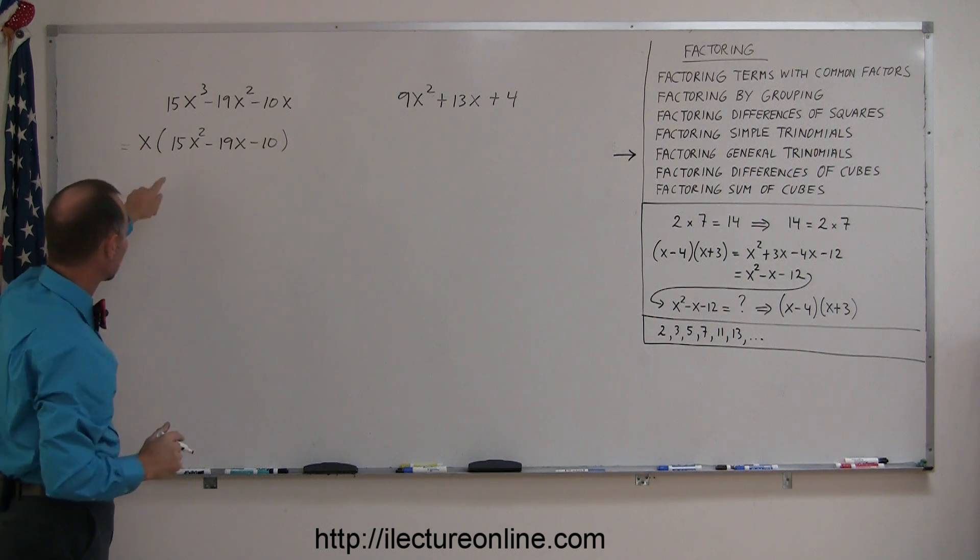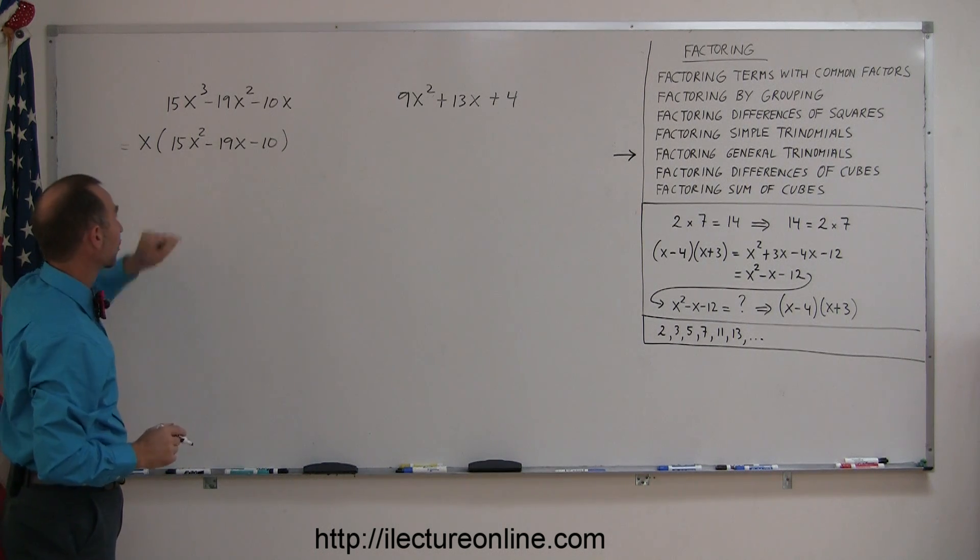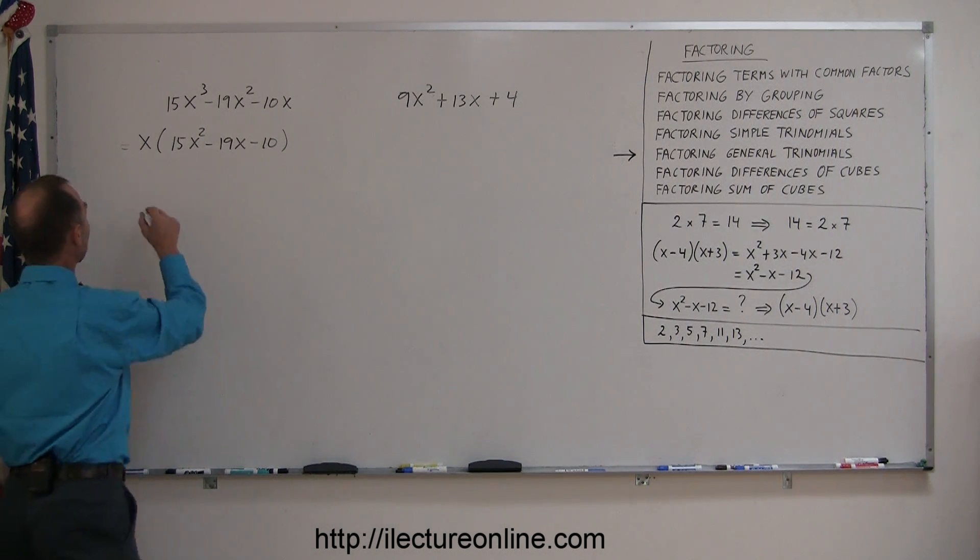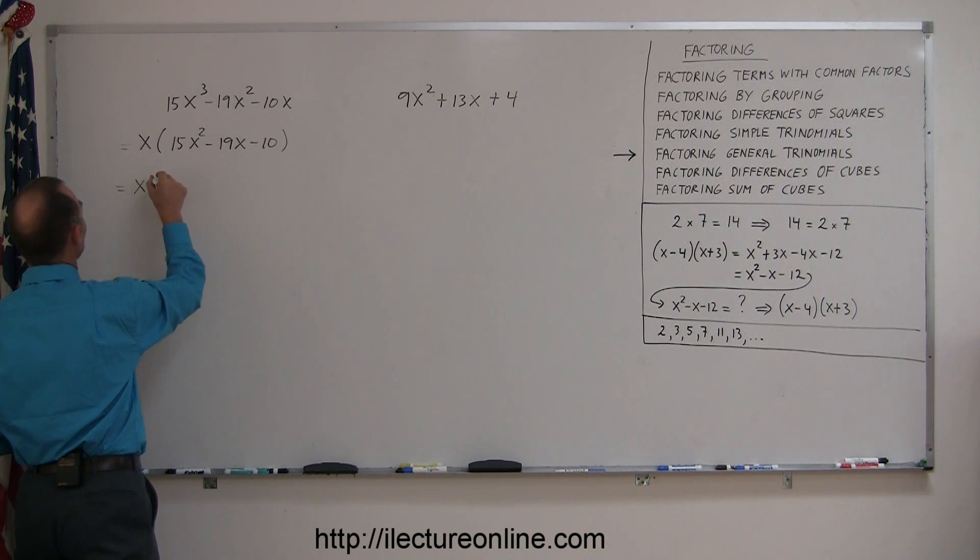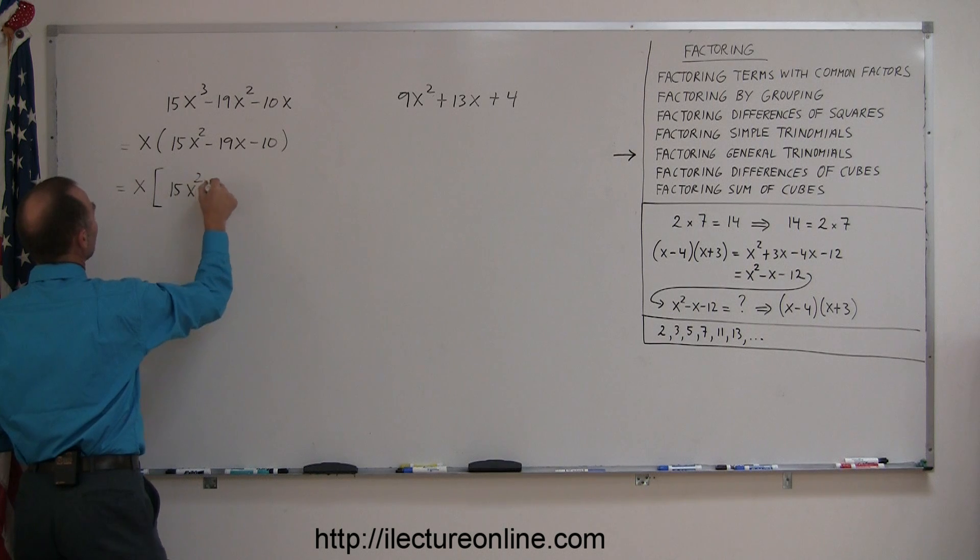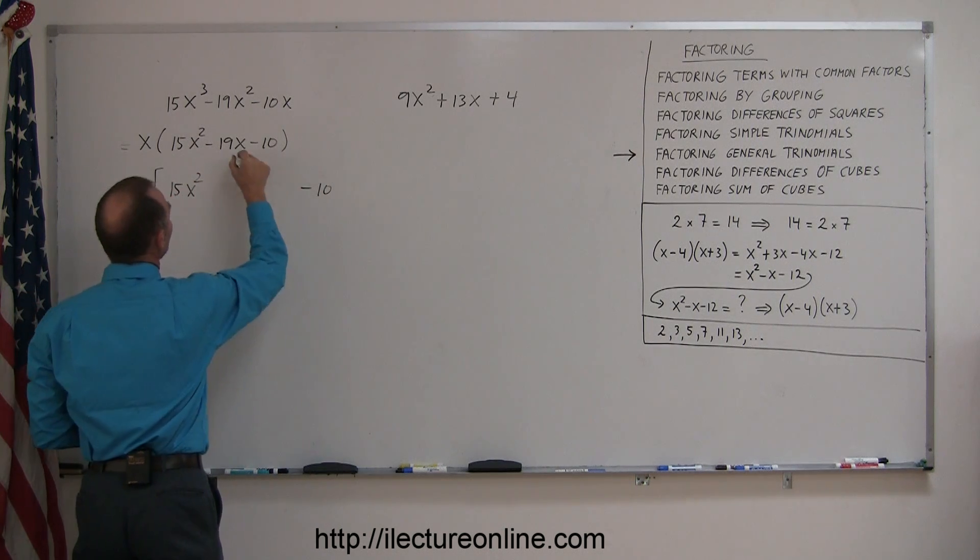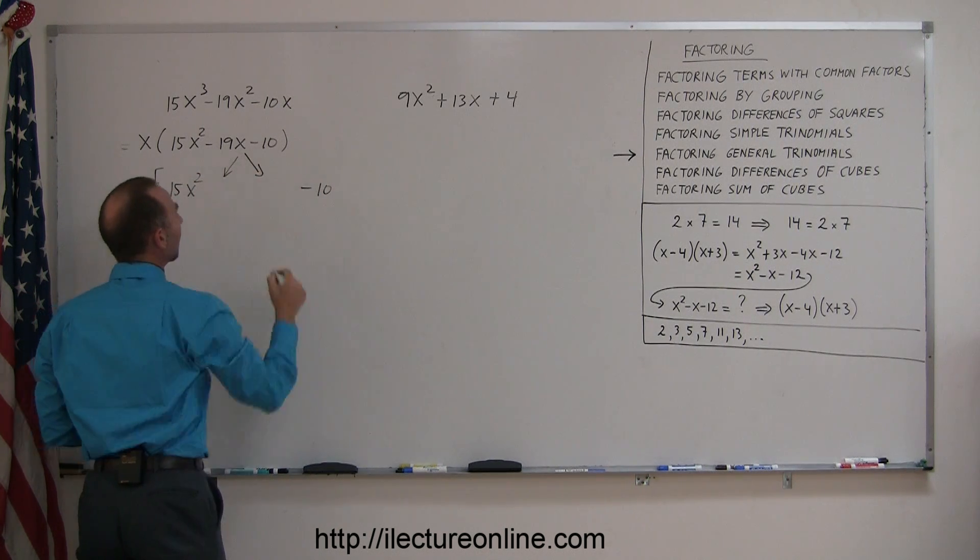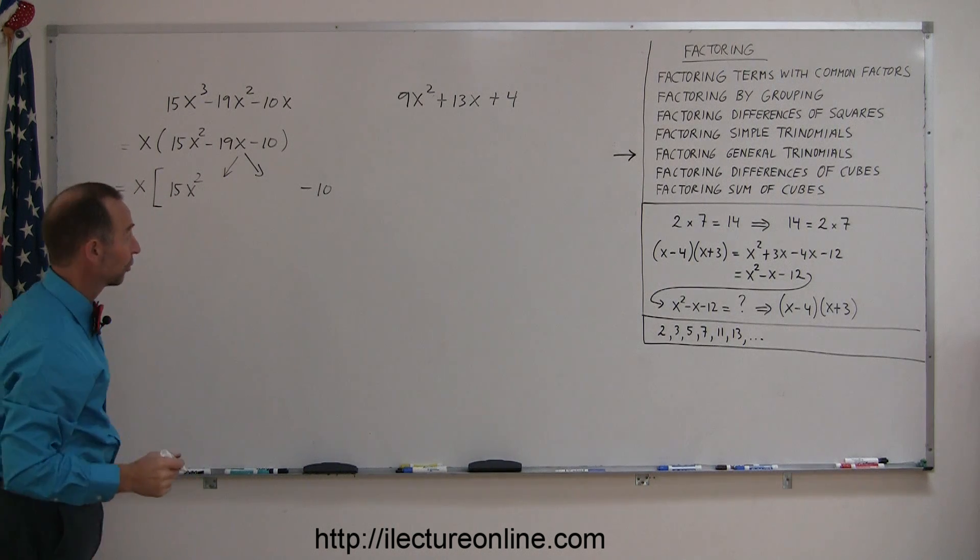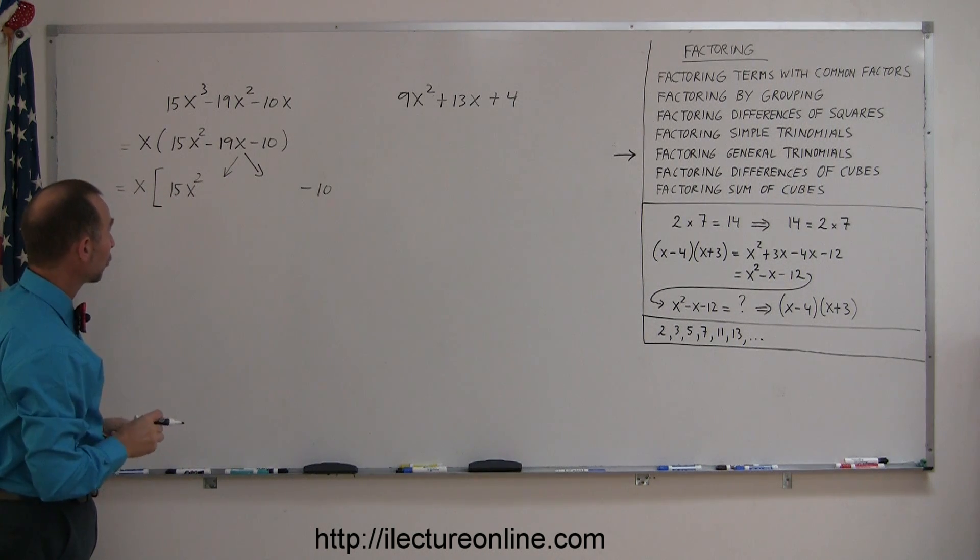But again, since the first term does not have a 1 in front of the x-squared term, you probably want to rewrite this as x times 15x-squared minus 10, and the middle term is going to be split up into the sum of two middle terms. And you're looking for those two coefficients.